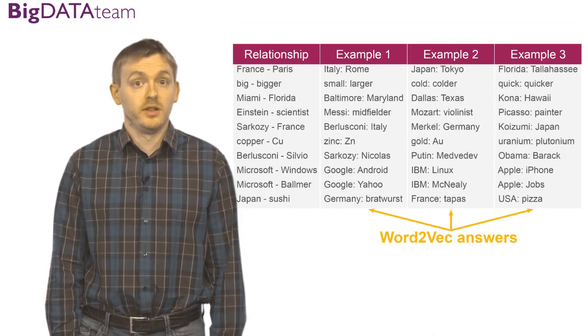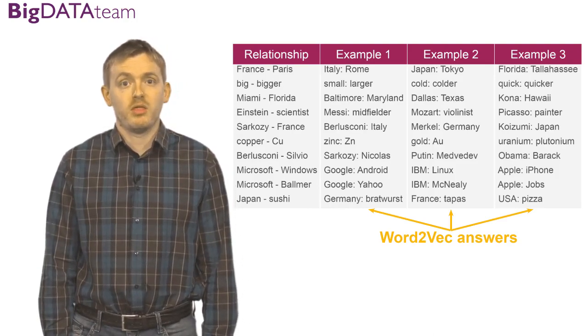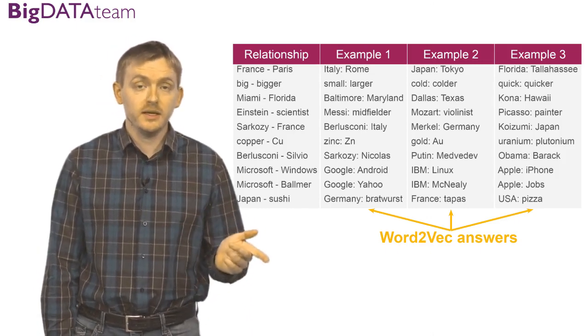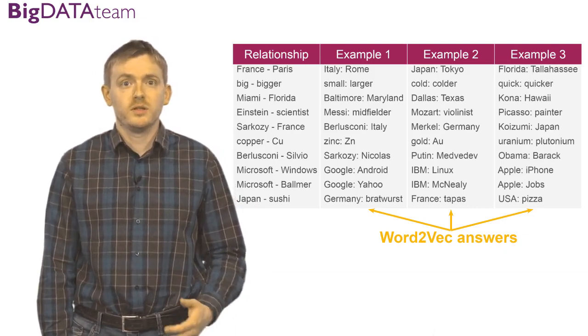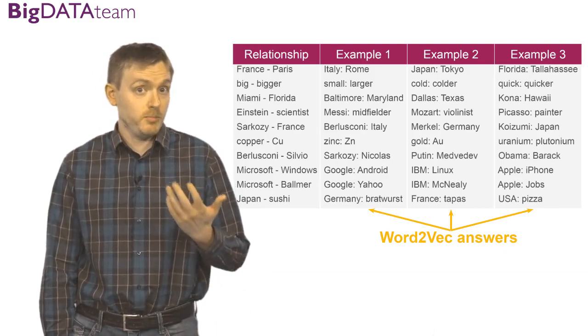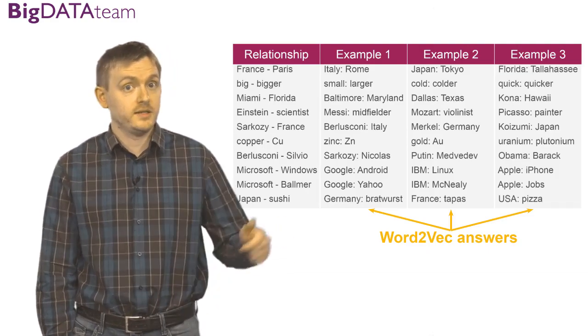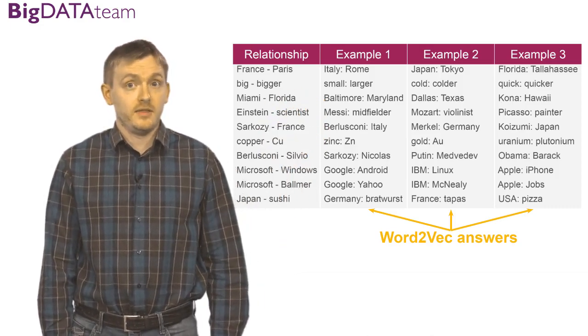One more example with relationships. For example, if you say to the Word2Vec model France, Paris, and Italy, the answer is Rome. And if you ask it what are the words associated with Japan, it is Tokyo. For Florida, it is Tallahassee. You see it here in this slide. In the second line, you can see how the Word2Vec model tries to guess the degrees of comparison.